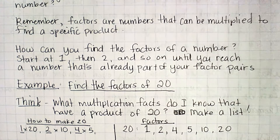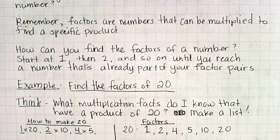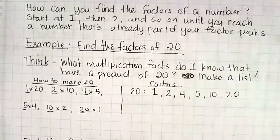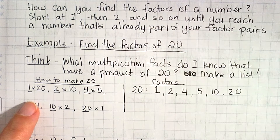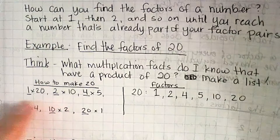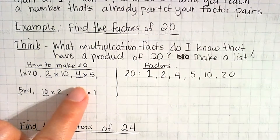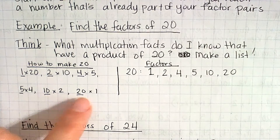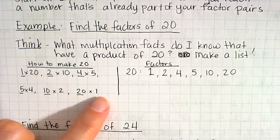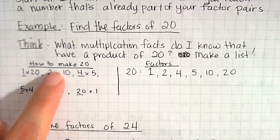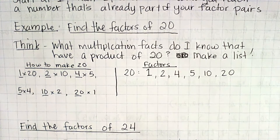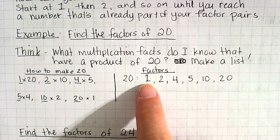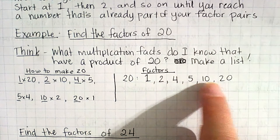If I ask you to find all of the factors of 20, think about what multiplication facts have a product of 20, then start making a list. I know 1 times 20 will give me 20. 2 times 10 will give me 20. 3 doesn't work. 4 times 5 gives me 20. Continuing: 5 times 4, 10 times 2, and 20 times 1. When the numbers start repeating, you know you've found all your factors. The factors of 20 are 1, 2, 4, 5, 10, and 20.